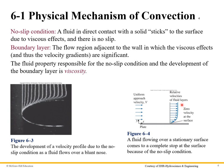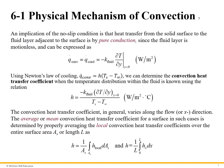You end up with this velocity profile. The implication of that no-slip condition is that the heat transfer from the solid surface to the fluid layer adjacent to the surface is by pure conduction, since the fluid layer is motionless. We can express this as Q dot convection equals Q dot conduction, which equals minus K of the fluid times the partial derivative of temperature with respect to Y at the surface, evaluated when Y equals 0. We can use Newton's Law of Cooling and refine the convection heat transfer coefficient by taking this equation, plugging it in, and solving for the H value.